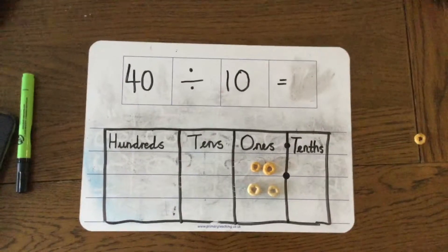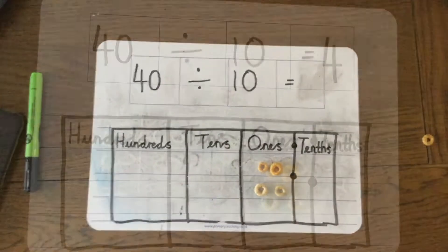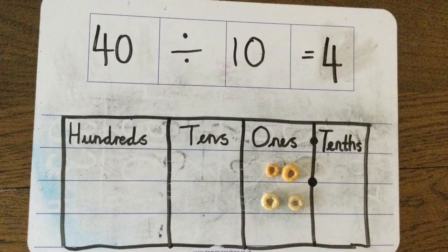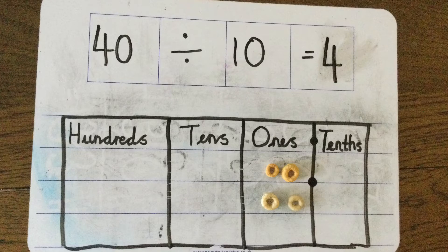So 40 divided by 10 is 4. You can see the place value of the digit 4 has changed from 4 tens to 4 ones.